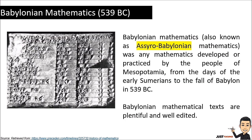Now let's proceed to Babylonian mathematics from 539 BC. Babylonian mathematics is also known as Assyrio-Babylonian mathematics, referring to the characteristics of Assyrian and Babylonian common culture. Babylonian mathematics was any mathematics developed or practiced by the people of Mesopotamia, from the days of the early Sumerians to the fall of Babylon in 539 BC. Babylonian mathematical texts are plentiful and well edited.